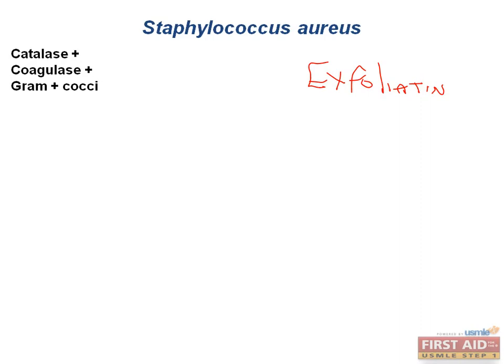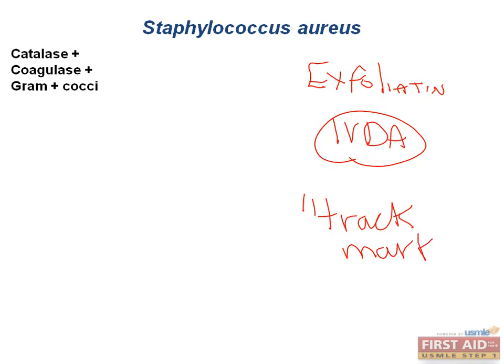Staph aureus is also the most common cause of bacterial endocarditis and osteomyelitis. The classic board history for staph aureus bacterial endocarditis involves a patient with a strong history of IV drug abuse, sometimes abbreviated as IVDA. Physical exam findings may not explicitly state drug use — instead, they might describe track marks, needle marks, or evidence of skin popping on exam. These are common findings in people with IV drug use.